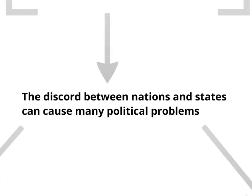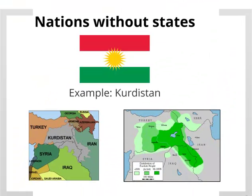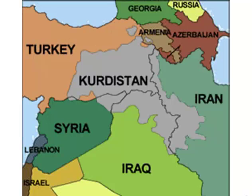Nations and states don't always occupy the same boundaries. We don't actually think about this all the time in America because America is a rare state where the nation and the state share the same boundaries. But there are many circumstances where this isn't the case — for example, there are many nations without states. The Kurds are a nation, a group of people who feel themselves to be similar to one another, but they don't have their own state. The proposed Kurdistan would take up portions of Turkey, Iran, Iraq, and Syria.